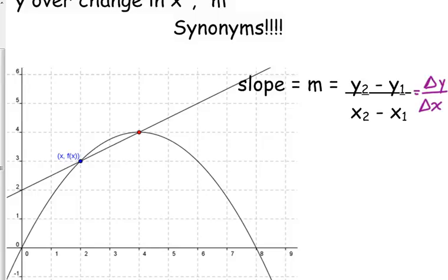And, I have two random points chosen on this parabola. I have a point at 2, 3, and I have a point at the vertex at 4, 4. And then I have a line drawn through that.